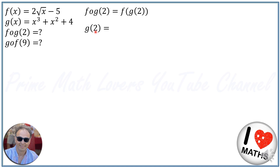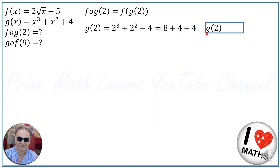To find g(2), we replace x with 2 in the function g. So it will be 2³ + 2² + 4. 2 cubed is 8, 2 squared is 4, plus 4 gives us g(2) = 16.